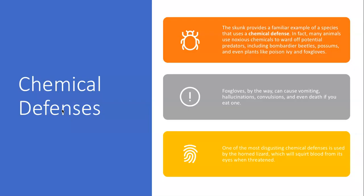Now let's talk about chemical defenses. The one we're most familiar with is the skunk, which produces a really disgusting noxious gas from glands near its tail. But many animals use noxious chemicals to ward off potential predators, including bombardier beetles, possums, and plants like poison ivy and foxgloves. Foxgloves can cause vomiting, hallucinations, and convulsions, and even death if you eat one — so I suggest not doing that.